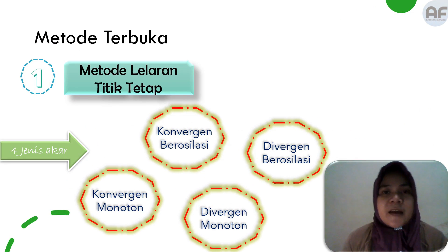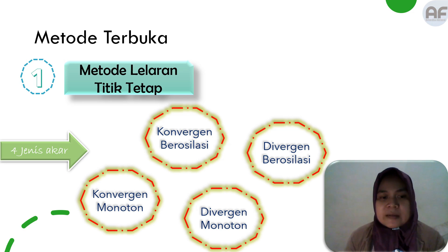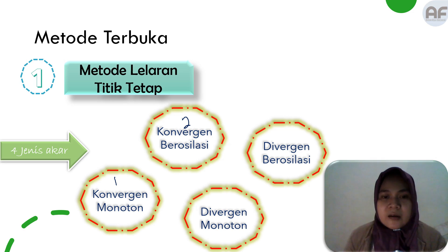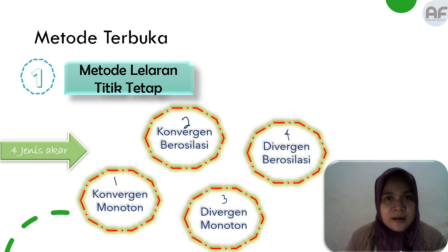Ciri khas dari metode lelaran titik tetap adalah memiliki empat jenis akar: yang pertama convergent monotone, yang kedua convergent berosilasi, yang ketiga divergent monotone, dan yang terakhir divergent berosilasi. Kita coba lihat ke grafiknya ya.